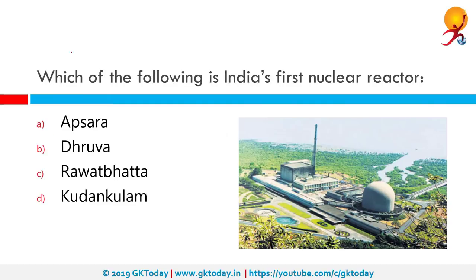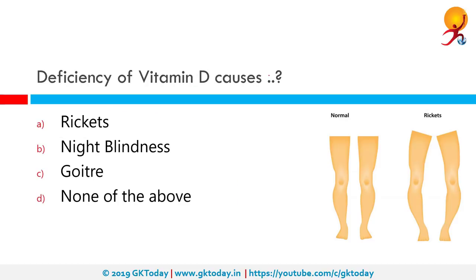Which of the following is India's first nuclear reactor? The correct answer is Apsara. Apsara is India's first nuclear reactor. It was built by the Bhabha Atomic Research Centre and became active on 4th August 1956. It is not only India's first nuclear reactor but also Asia's first.